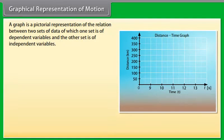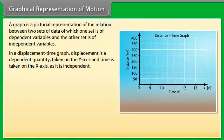Graphical representation of motion. A graph is a pictorial representation of the relation between two sets of data, of which one set is of dependent variables and the other set is of independent variables. In a displacement-time graph, displacement